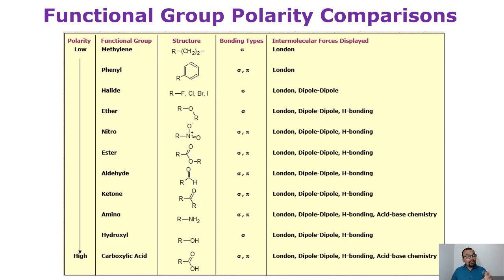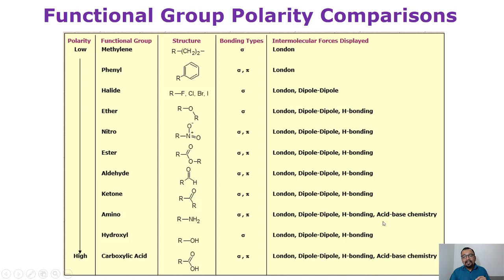Dipole-dipole interaction in amino groups is due to the presence of nitrogen. This nitrogen can also form a hydrogen bond with a compound that has a hydrogen atom present on it. And then there is acid-base chemistry because amine is basic in nature. So if your stationary phase has some acidic functional groups, the acid-base chemistry can also play a very important role.